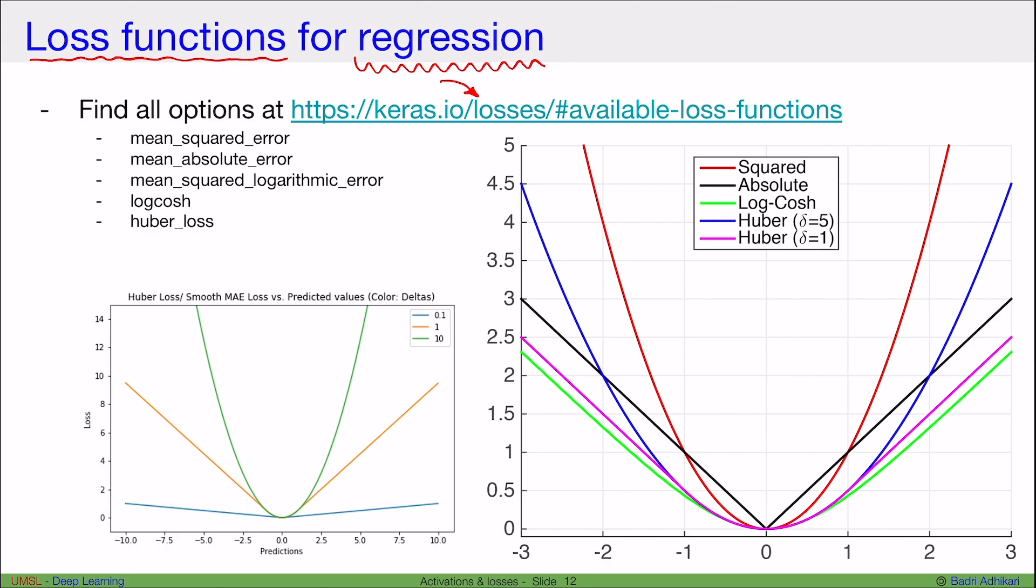Here are some of the commonly used loss functions for regression problems: mean squared error, mean absolute error, mean squared logarithmic error, log cosh, and Huber loss.